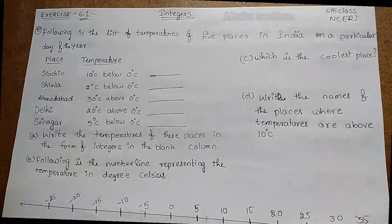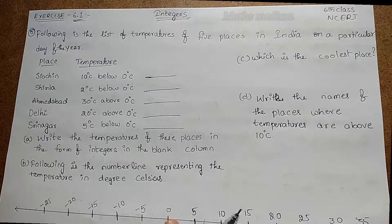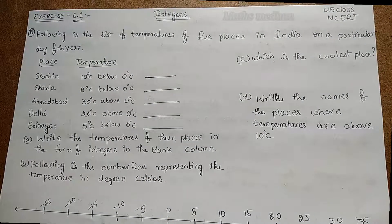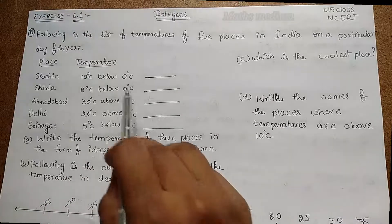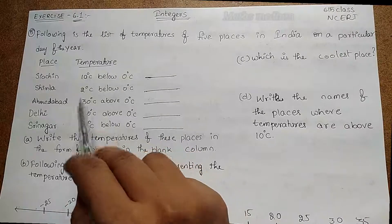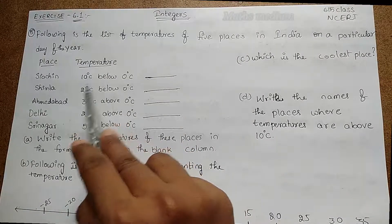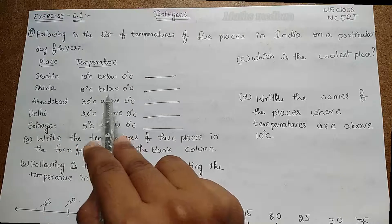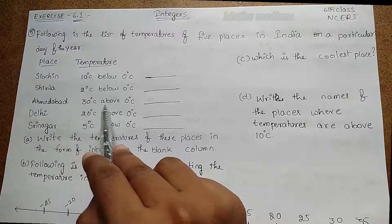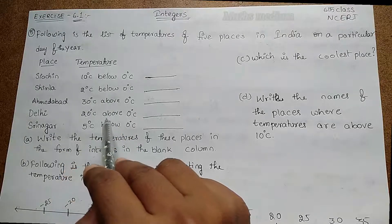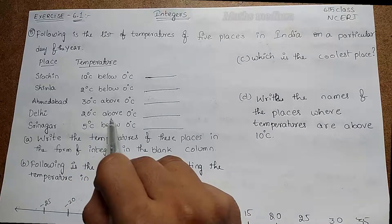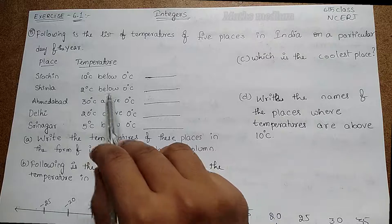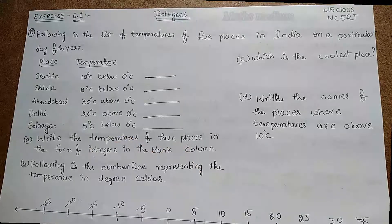In a number line we have 0 — positive numbers on one side and negative numbers on the other. 0 is in the middle between positive and negative numbers. So here: 10°C below, 2°C below, 30°C above, 20°C above, and 5°C below. Above means it is a positive number and below means it is a negative number.